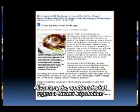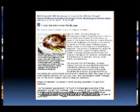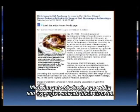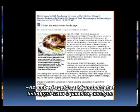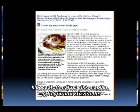Michelangelo hid an anatomy lesson in the Sistine Chapel. Human brainstem is depicted in the image of God — Neurosurgery authors argue, July 19, 2010. Detailed analysis of Michelangelo's Sistine Chapel frescoes reveals a secret that's been hidden for 500 years: an image of the human brainstem in a panel showing God at the beginning of the creation, according to an article in the May issue of Neurosurgery, the official journal of the Congress of Neurological Surgeons.